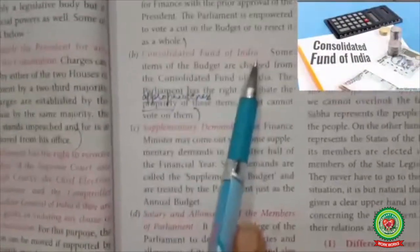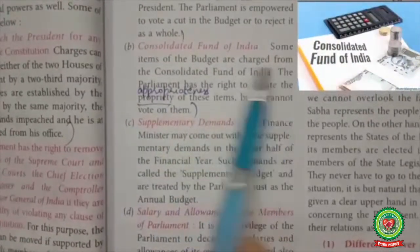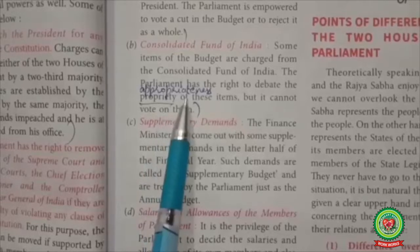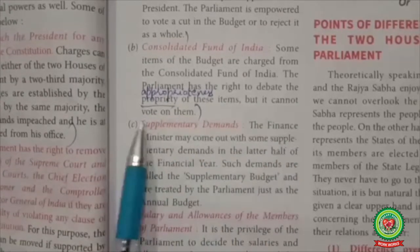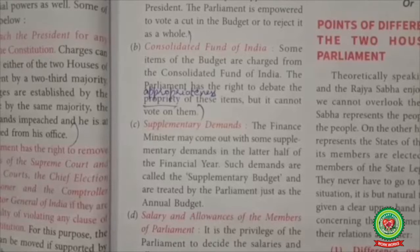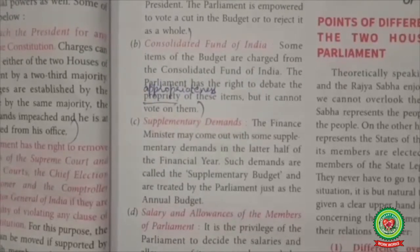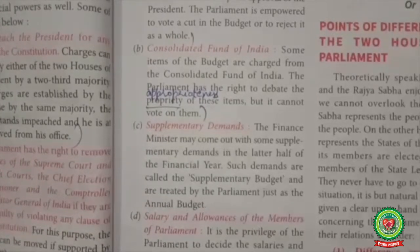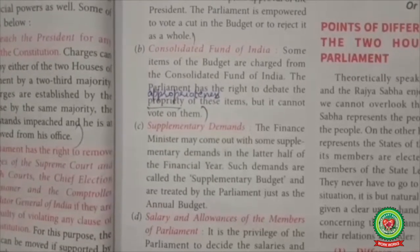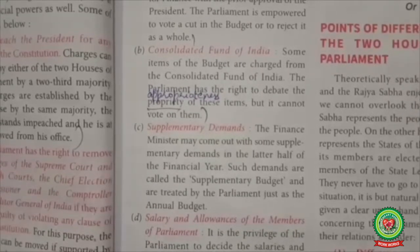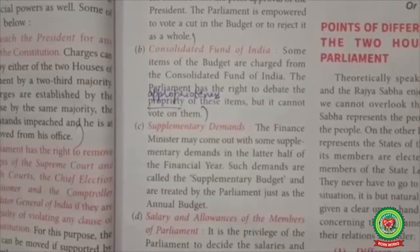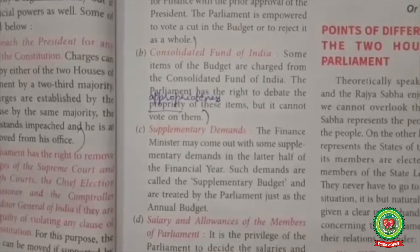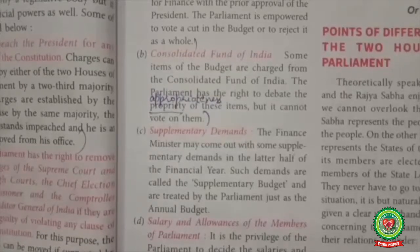Consolidated Fund of India: Some items of the budget are charged from the Consolidated Fund of India. Parliament has the right to debate the propriety (means appropriateness) of these items but it cannot vote on them. The Consolidated Fund of India includes revenues received by the government through taxes and expenses incurred in the form of borrowings and loans. The budget consists of two types of expenditures: the expenditure charged upon the Consolidated Fund of India and the expenditure made from the Consolidated Fund of India. The charged expenditure is non-votable by Parliament; it can only be discussed.